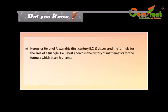Did you know? Heron, or Hero of Alexandria, a first century BCE mathematician, discovered the formula for the area of a triangle. He is best known in the history of mathematics for the formula which bears his name.